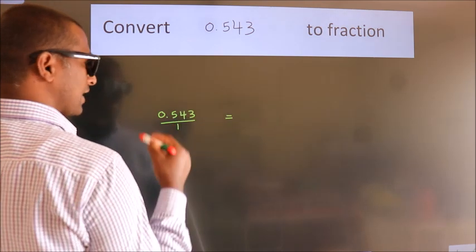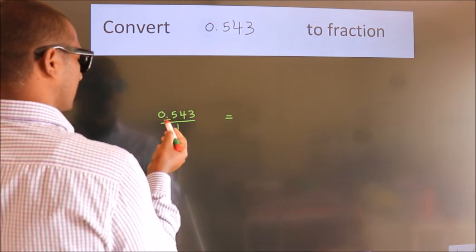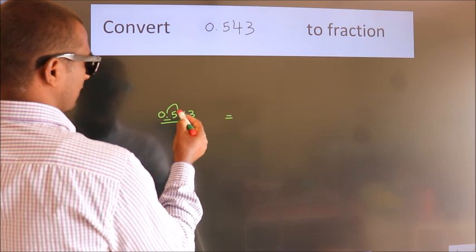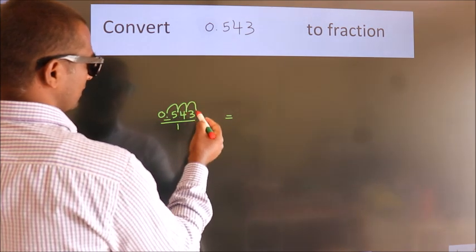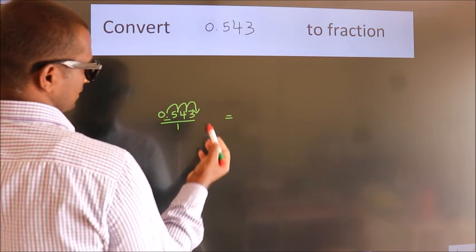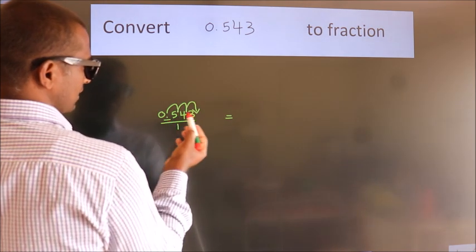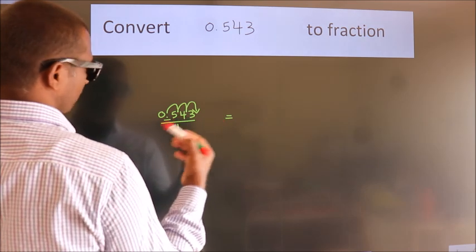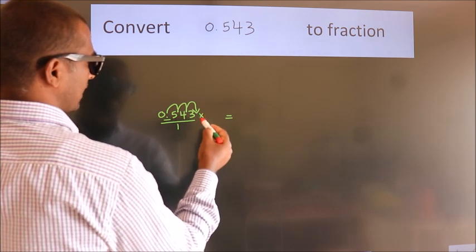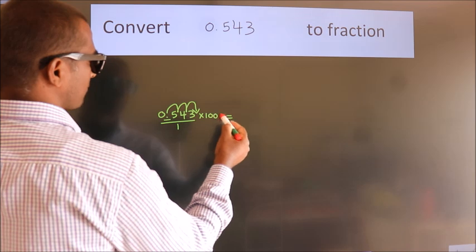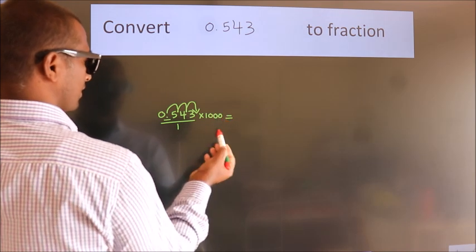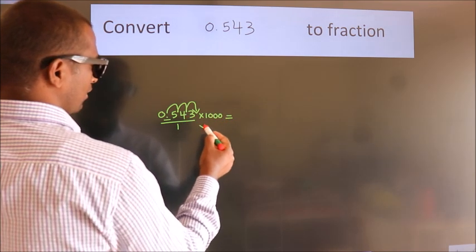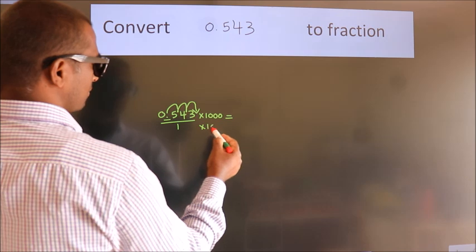we should move this decimal after 1, 2, 3 numbers. To move this decimal after 3 numbers, we have to multiply it with 1000. Whatever number you are multiplying in the numerator, in the denominator also do the same.